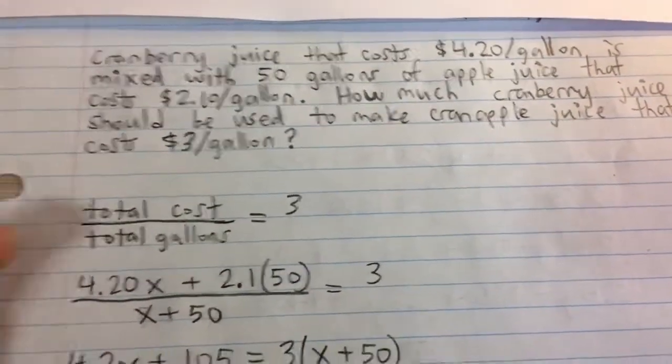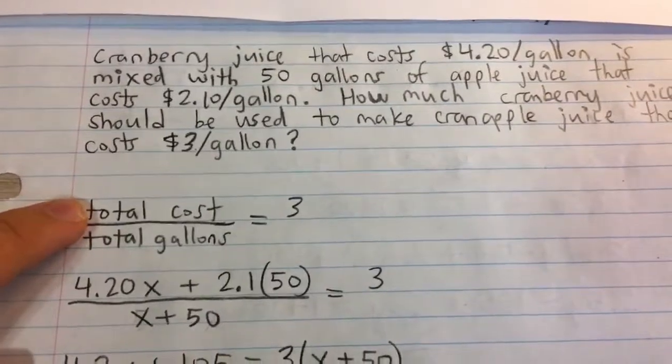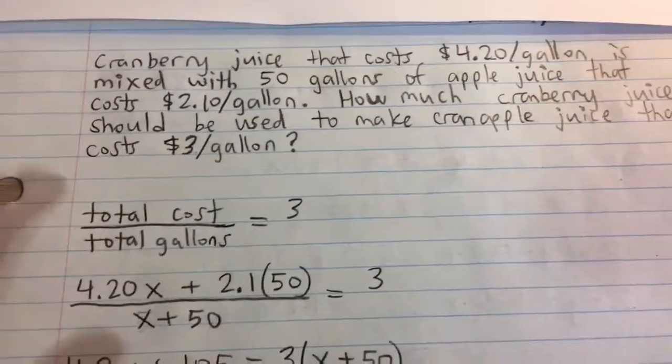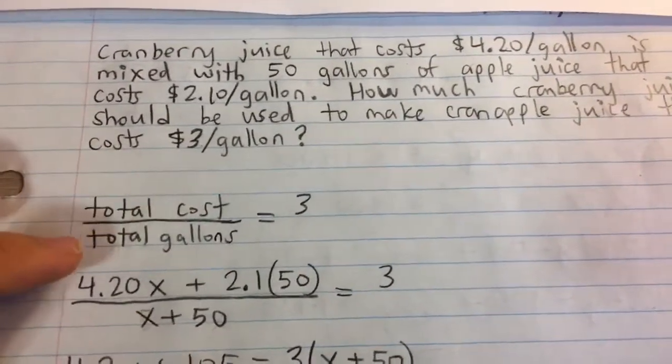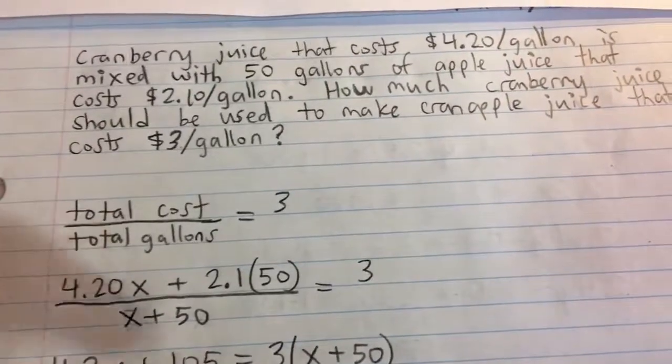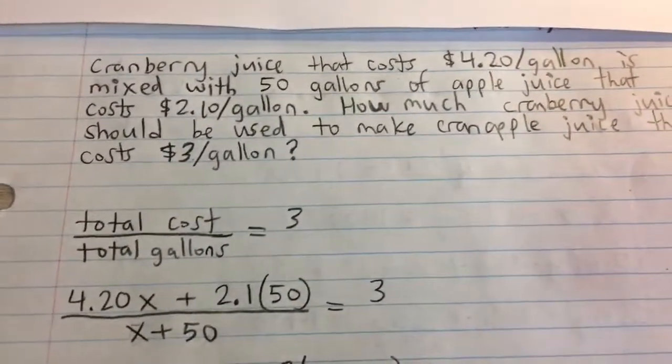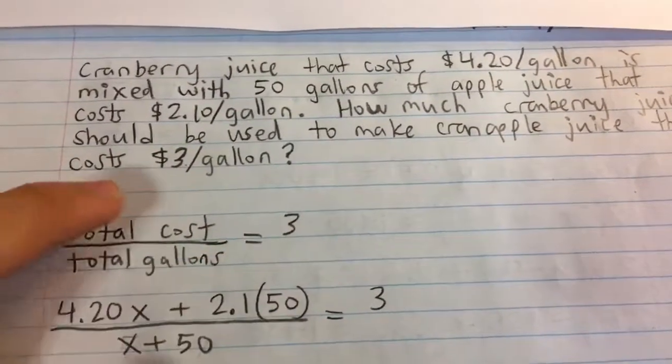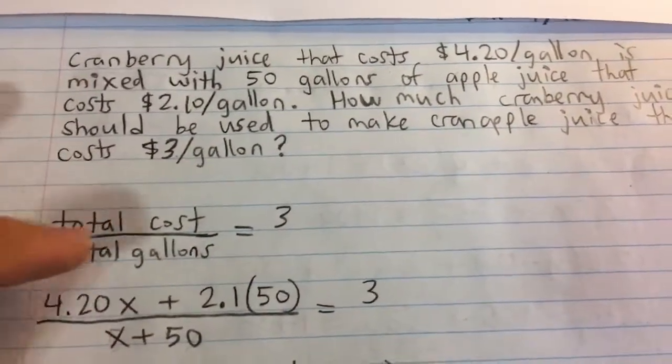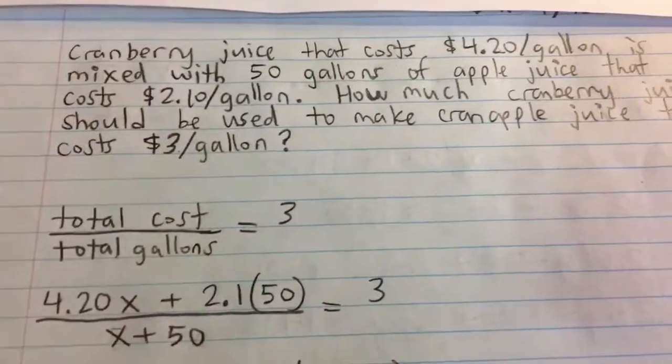To do this, we're going to say the total cost of the mixture, the mixture of cranberry and apple juice, divided by the total gallons - in other words, the sum of the gallons of apple and cranberry juice - have to be equal to 3. If we take the cost per gallon of everything, it has to be equal to $3 per gallon.